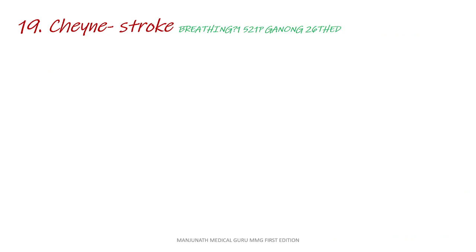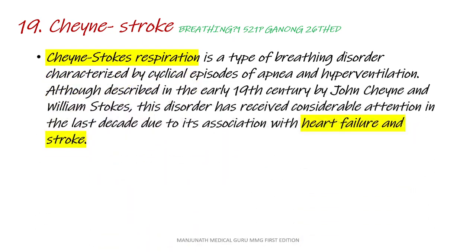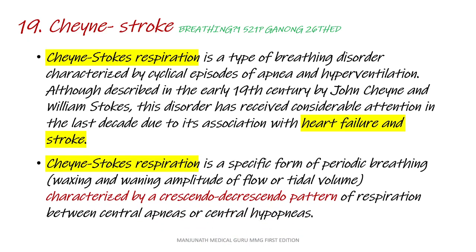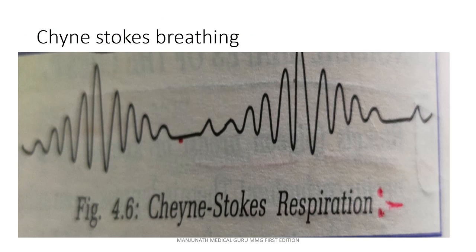Question number 19: Cheyne-Stokes breathing. The answer is from Ganong 26th edition, page number 1521. Cheyne-Stokes respiration is a type of breathing disorder characterized by cyclical episodes of apnea and hyperventilation. Although described in the early 19th century by John Cheyne and William Stokes, this disorder has received considerable attention in the last decade due to its association with heart failure and stroke. It is a specific form of periodic breathing characterized by a crescendo-decrescendo pattern of respiration between central apneas or central hypopneas. There is a cyclical pattern of hyperventilation followed by apnea.